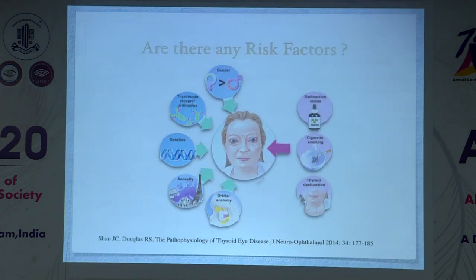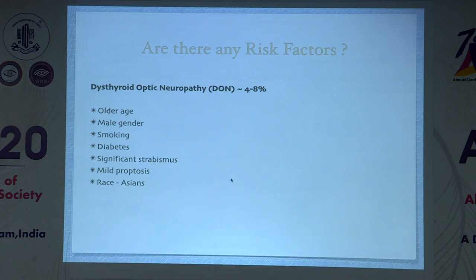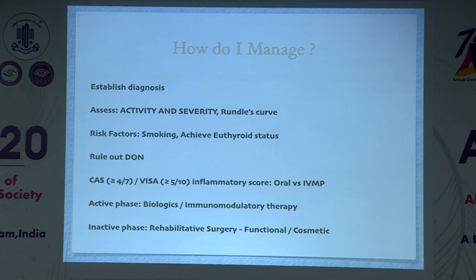Important modifiable risk factors include radioactive iodine, cigarette smoking, and thyroid dysfunction — patients should aim for euthyroid status. Clinical risk factors associated with optic neuropathy include older age, male gender, smoking, diabetes, and significant strabismus with mild proptosis. Notably, mild proptosis is a very high predictor of thyroid optic neuropathy, particularly due to involvement of the extraocular muscles.